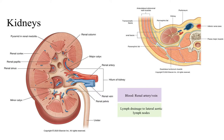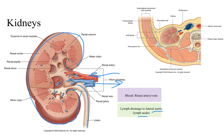The kidneys themselves have a bean-shaped structure. The ureter comes out of the kidney, the blood supply going in is the renal artery, and blood coming out is through the renal vein. The lymphatic drainage goes to the lateral aortic lymph nodes — the lymph nodes to the lateral side of the aorta, on each lateral side.